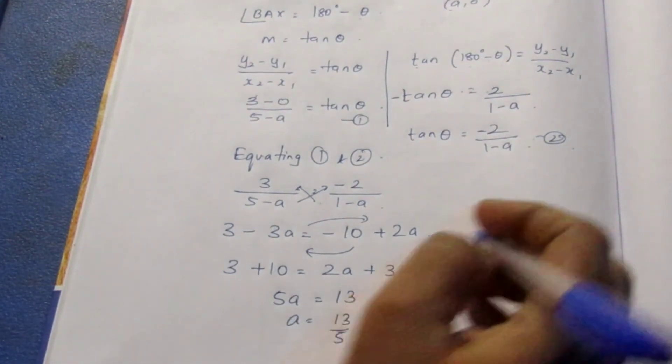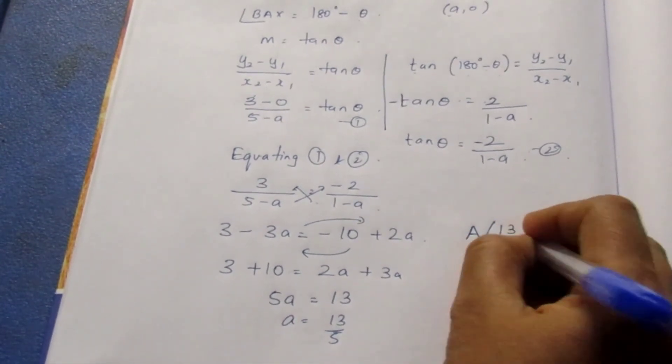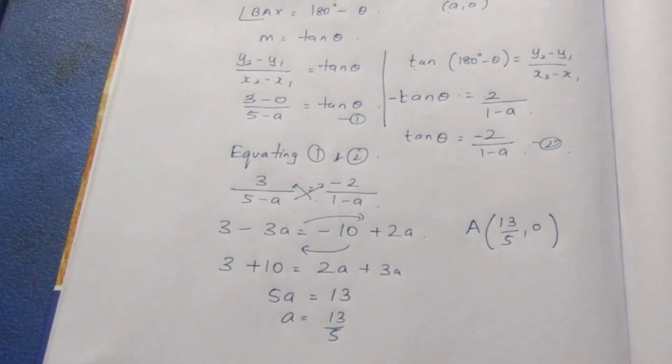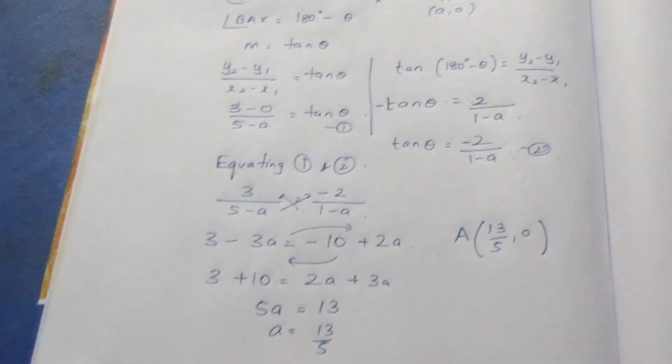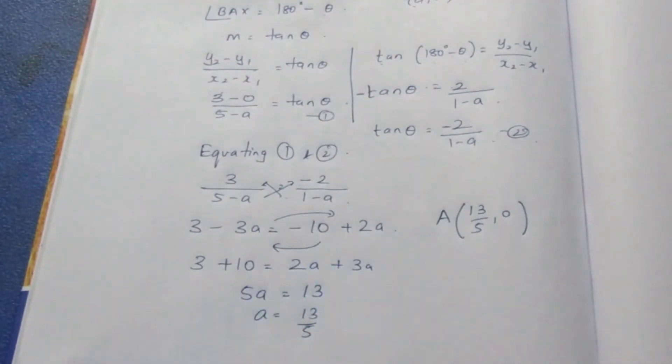We want the value of A. So A becomes (13/5, 0) because it's on the x-axis. There is no y value in it. This will be your final answer for the sum. That's all with the sum. Thank you.